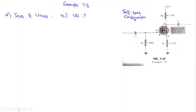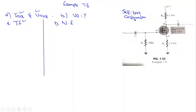We have an N-channel depletion-type MOSFET — as you can see, this is its symbol. We have IDSS = 8 milliampere and VP = minus 8 volt. To find the Q-point, that is IDQ and VGSQ, we need two curves: the transfer characteristic curve and the network characteristic (load line) curve. For the depletion-type MOSFET we need four points. The first point is when VGS = 0, ID = IDSS = 8 milliampere.